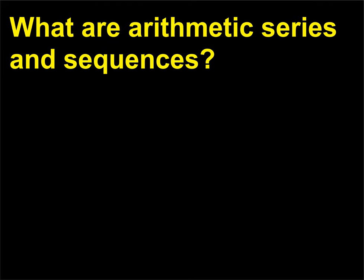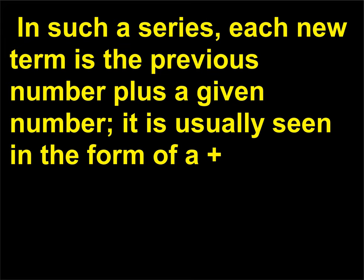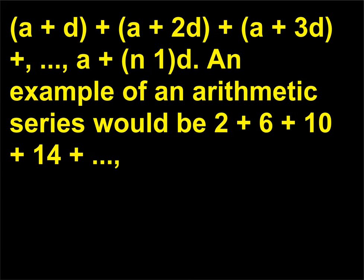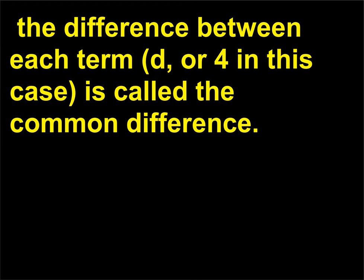What are arithmetic series and sequences? An arithmetic series, also called arithmetic progression, is one of the simpler types of series in mathematics. In such a series, each new term is the previous number plus a given number. It is usually seen in the form a + (a+d) + (a+2d) + (a+3d) + … + (a+(n−1)d). An example of an arithmetic series would be 2 + 6 + 10 + 14 + …, in which d = 4. The initial term is the first one in the series. The difference between each term, d — or 4 in this case — is called the common difference.